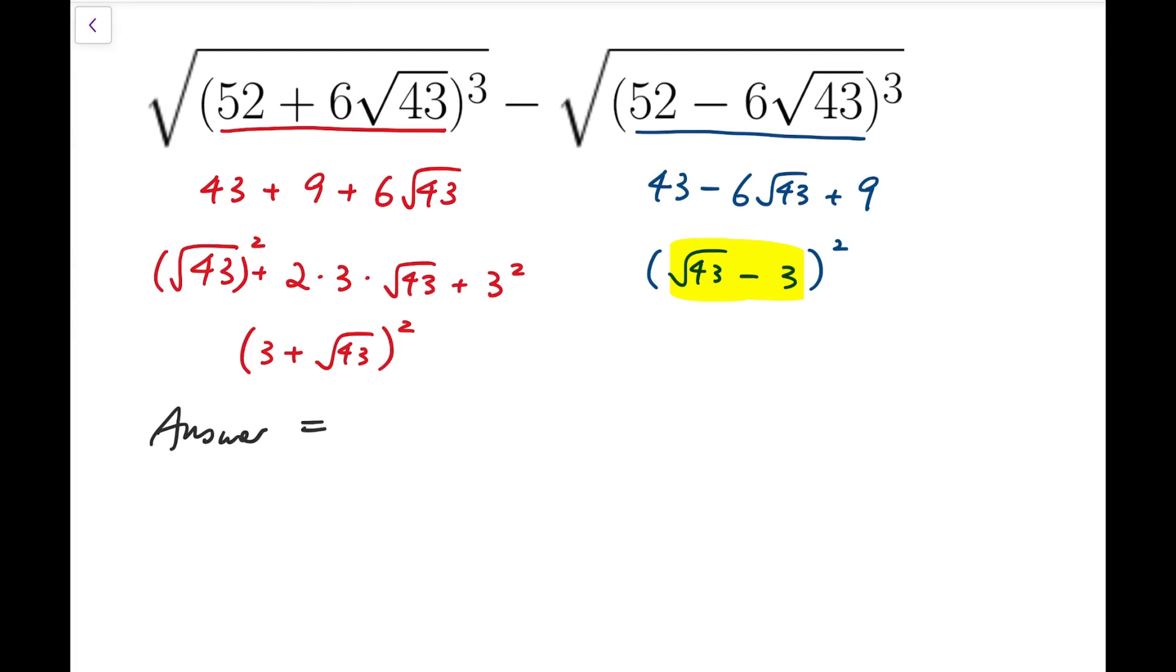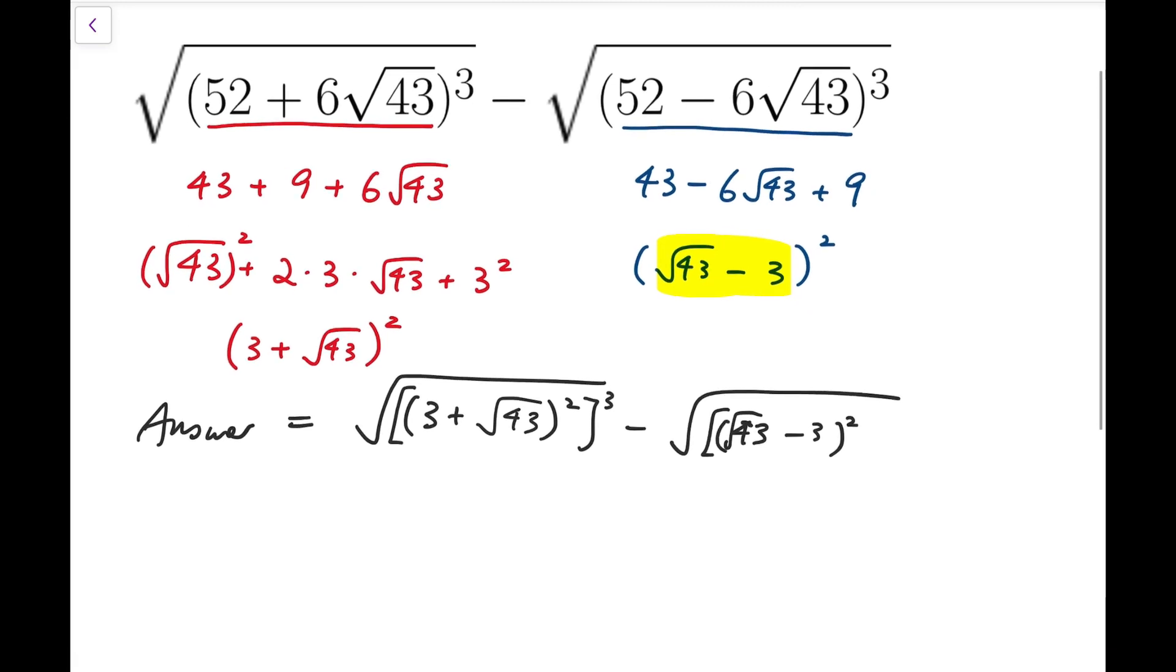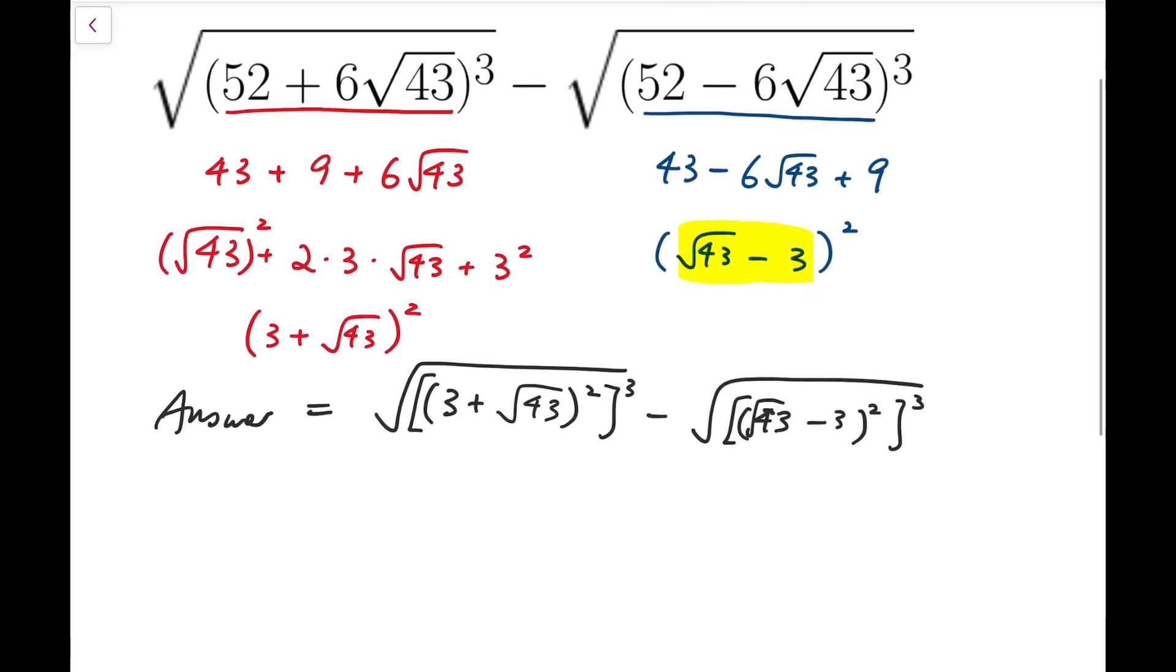It's actually equal to square root of 3 plus square root of 43 all squared and then all cubed. Now, this square root and the square root, they will cancel out.